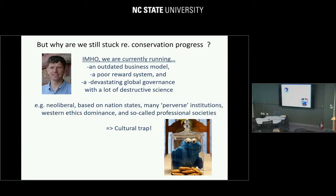The question then is: why are we stuck? Why do we have so many problems in the crisis in conservation? In my humble opinion — not everybody will agree — we are running an outdated business model. We have a very poor reward system for what we actually get rewarded for, why we go to work every day. And we also have a devastating global governance that allows for a lot of destructive science where we do science that doesn't really provide the progress. There's a lot of being neoliberal, of being based solely on nation states. We have institutions that are so-called perverse — they provide efforts and initiatives that are counterproductive. There's a dominance of Western ethics, which probably isn't so healthy either. And then we have these professional societies that are, in my view, really not so professional in many ways. Machine learning is a classic example. So we have a cultural trap — it's clearly there.